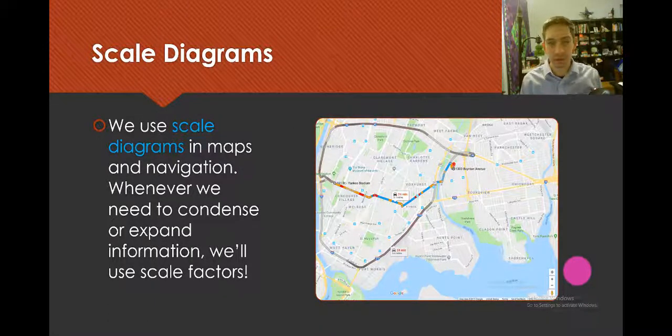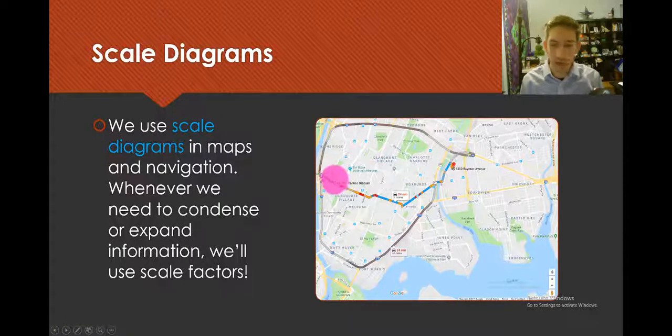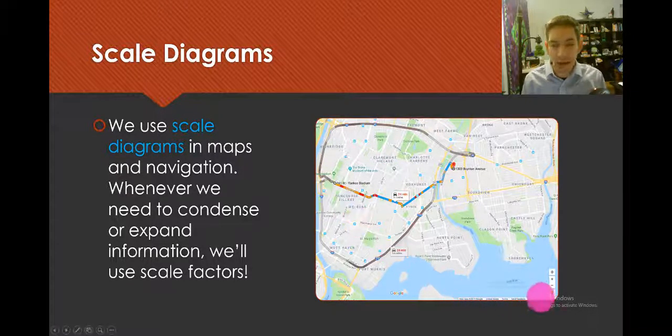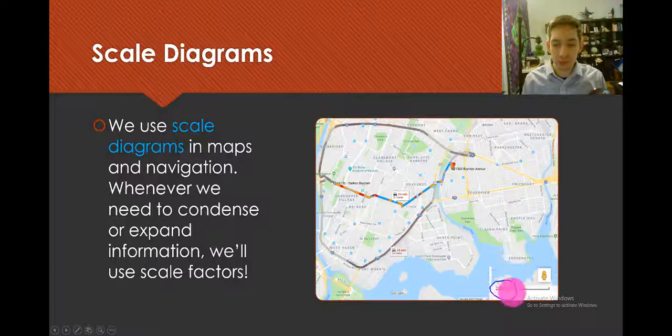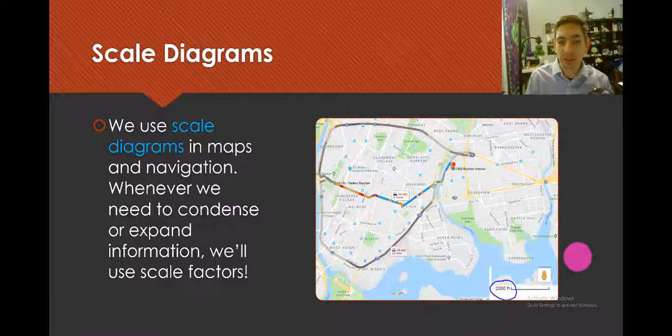So if you ever use Google Maps, this for example is the directions to get from our school to Yankee Stadium. When you use Google Maps there's a little key in the bottom, it's hard to see on this screen, but I'll blow it up a little bit. It'll say 2,000 feet is represented by this much distance, so you have an idea if you're walking for example how far away it actually is.